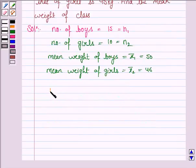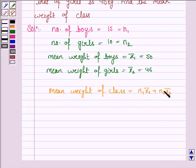Now the mean weight of the class will be given by N1 times X1 bar plus N2 times X2 bar, divided by N1 plus N2.